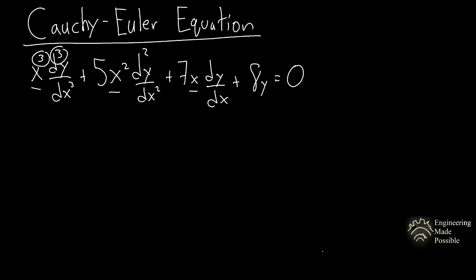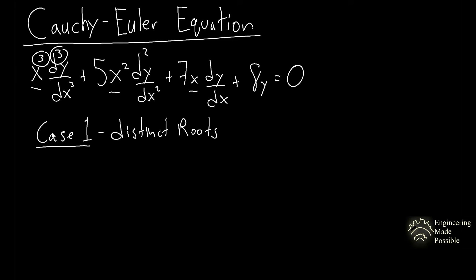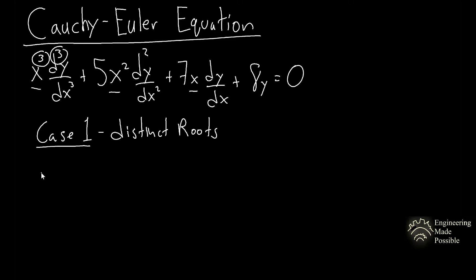The way to solve a Cauchy-Euler equation is very similar to how we solved differential equations with constant coefficients — using the auxiliary or characteristic equation. There are three cases: case one is distinct roots, case two is repeated roots, and case three is complex roots.